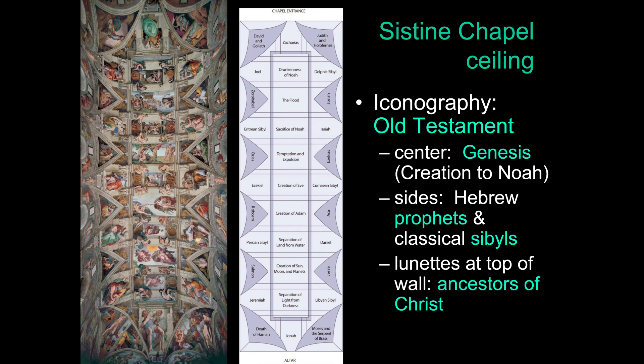Here's a diagram of the different subjects, all from the Old Testament except the Sibyls. In the center, scenes run down the middle starting with the creation — the separation of light from darkness — and ending with the drunkenness of Noah. These are all Genesis: the creation of the sun, moon, and planets; the separation of land and water; the creation of Adam; the creation of Eve; the temptation and fall of man; the expulsion from the Garden of Eden; Noah sacrificing; the great flood; and the drunkenness of Noah.